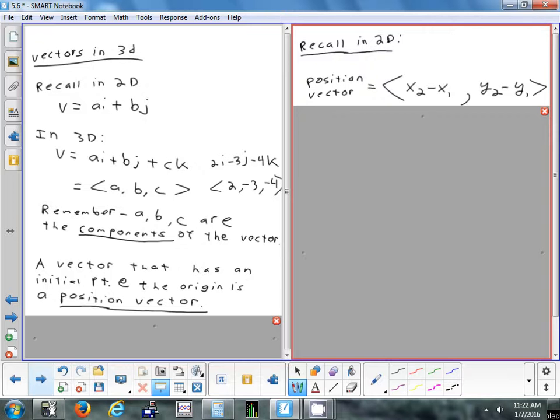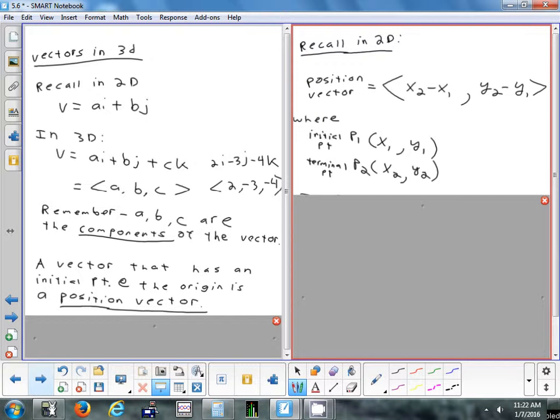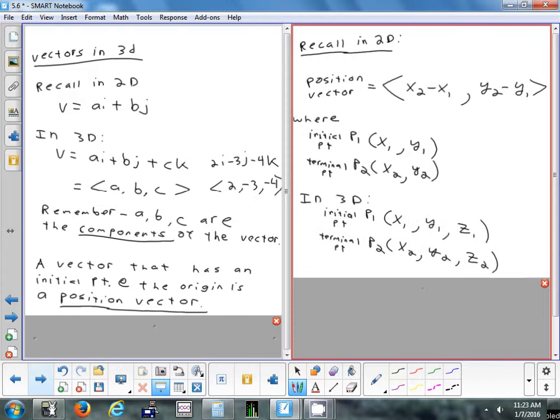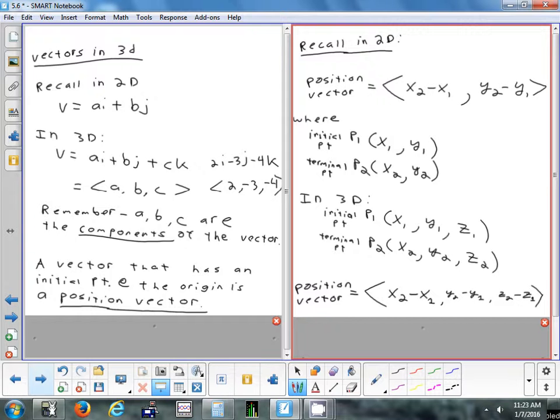Just like in 2D, A, B, and C are the components of the vector. The X component, Y component, and Z component. If you have a vector that has its initial point at the origin, that's called a position vector. And it's the same thing in 3D. In 2D, you've got this in your notes. This is how we found a position vector. We did X2 minus X1, comma, Y2 minus Y1. Where P1 is the initial point, that's where your vector starts. P2 is the terminal point. That's where it stopped.